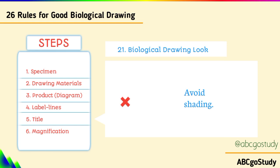Number twenty-one, biological drawing look: avoid shading your drawing either with a lead pencil or coloring. This is exactly why an artist could get only 10% while someone without artistic experience gets 80 or 90%, because you don't need to shade — just draw things that are clear and plain.